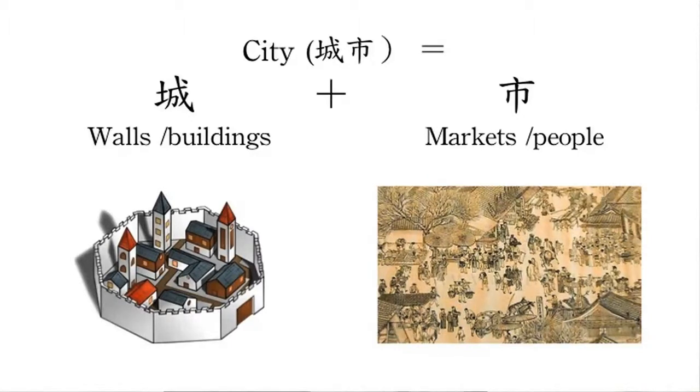In Chinese, the characters for 'city' are made of 'cheng,' meaning building and physical capital, and 'shi,' meaning people in the market. Last year, China invested more than 50% of GDP in urban real estate, infrastructure, and manufacturing jobs to create cities. This is a high capital-intensive model for fast urbanization.